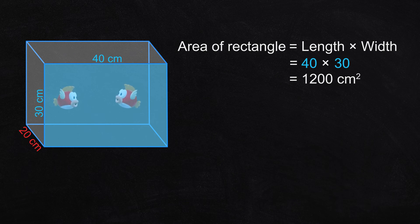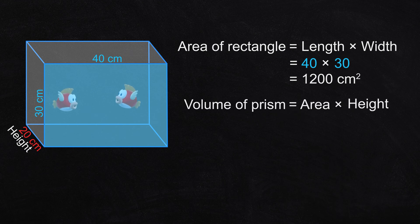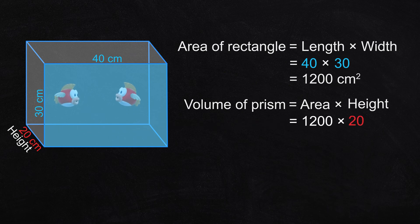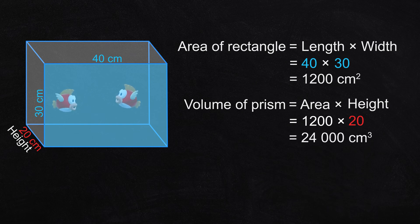Then we multiply the area of this rectangle by the other dimension that we call the height — it's not really the height, but we call it that in the rule. The volume of the rectangle-based prism equals the area multiplied by the height. That's 1,200 multiplied by 20, which is 24,000. The volume of this rectangular prism is 24,000 cubic centimeters.